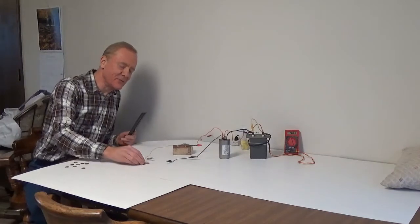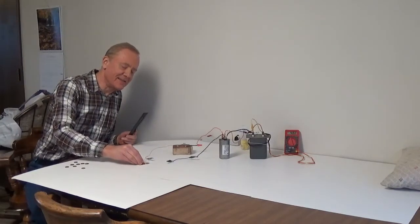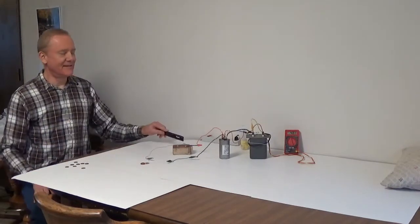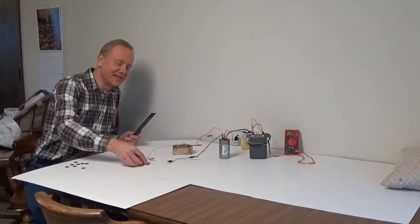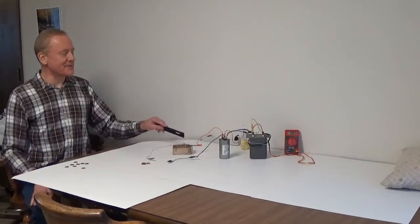So here's an older pre-1982 penny, and those are mostly copper, and you'll notice that goes up 8 or 10 inches, because the copper conducts electricity better.